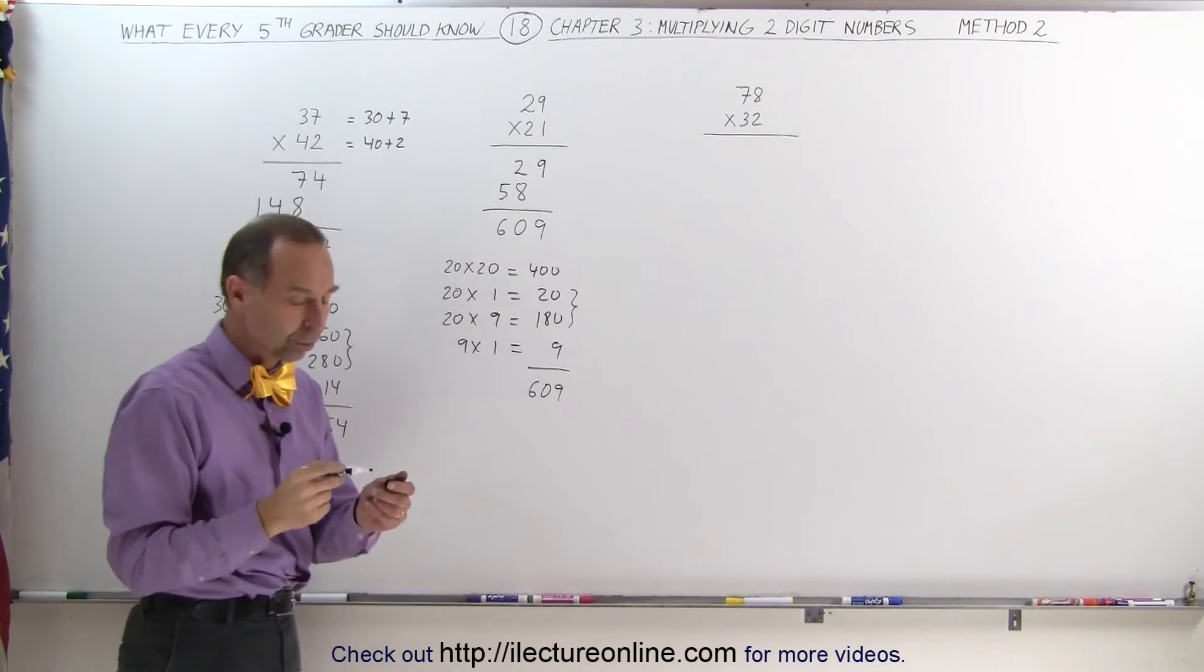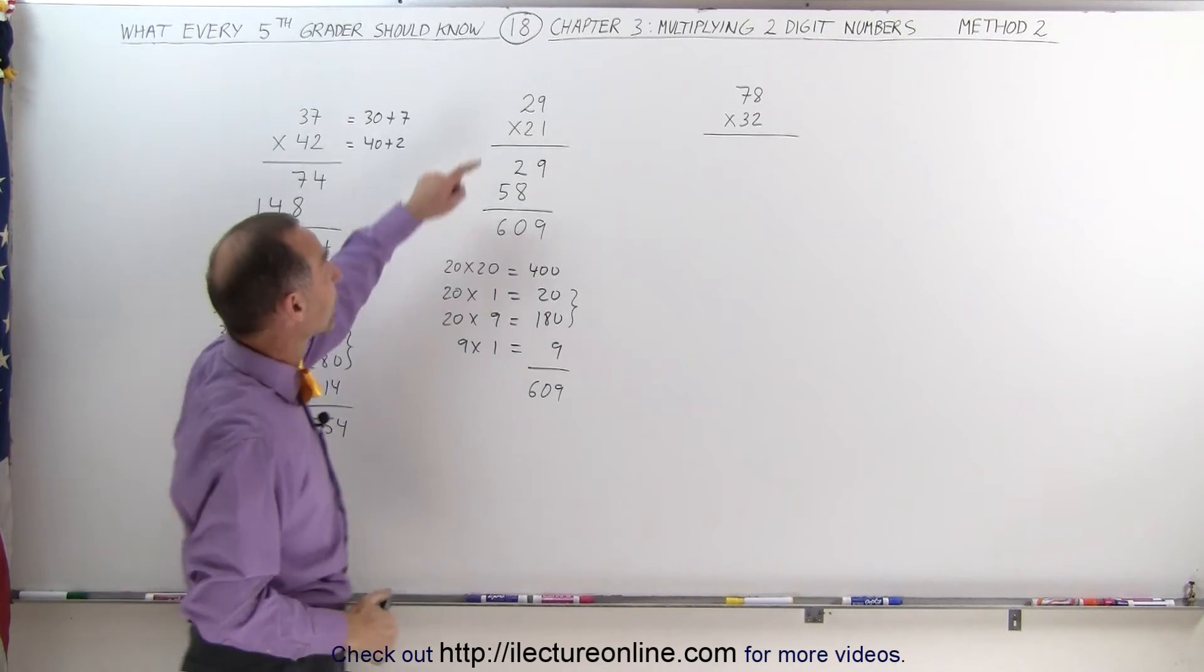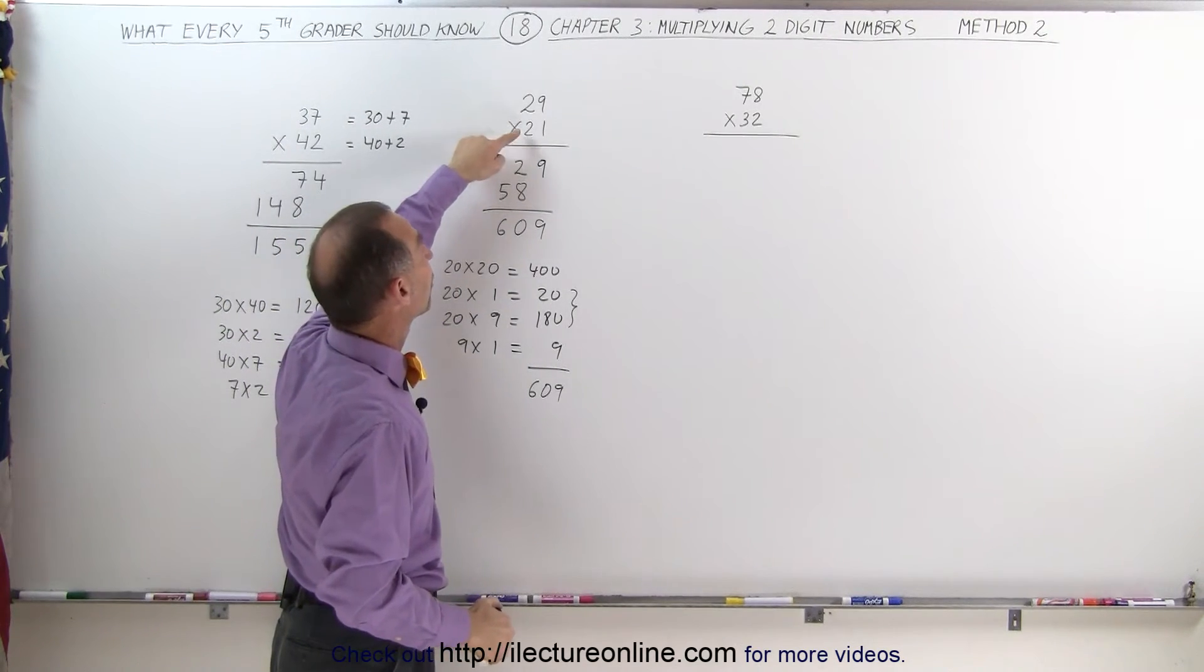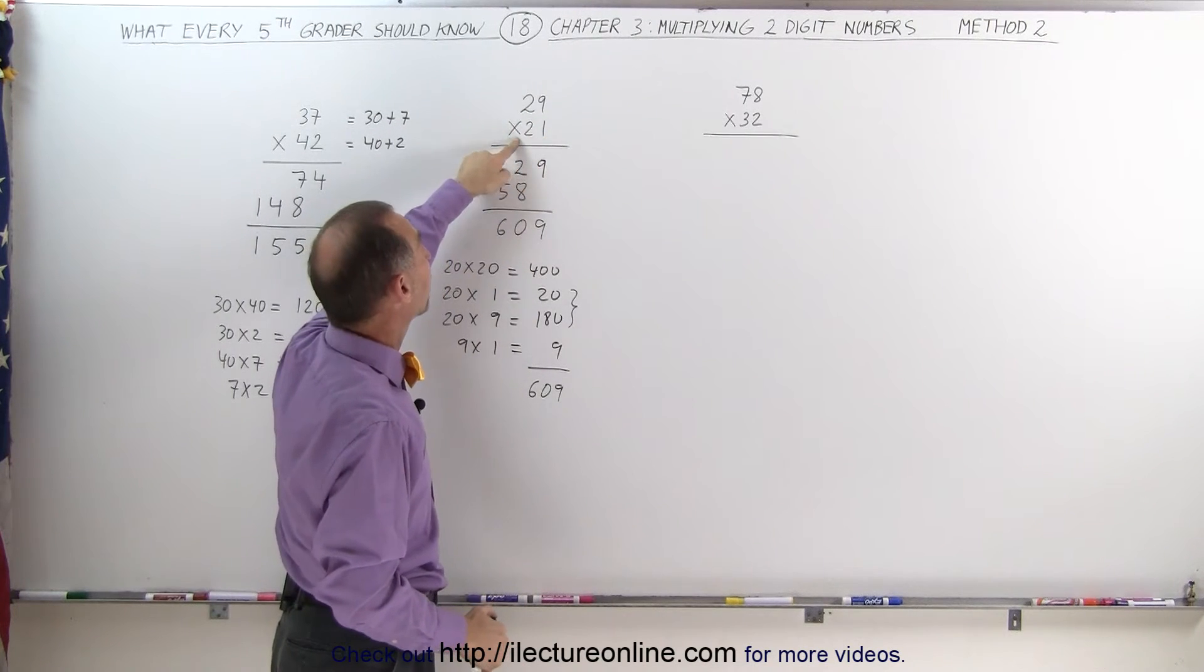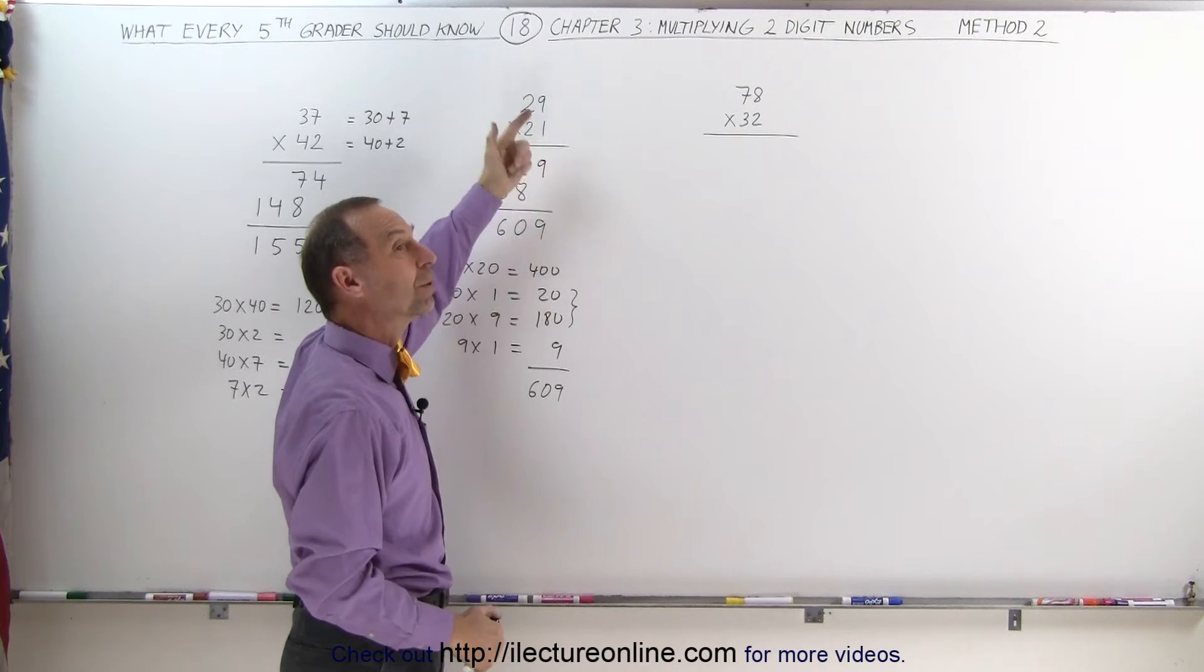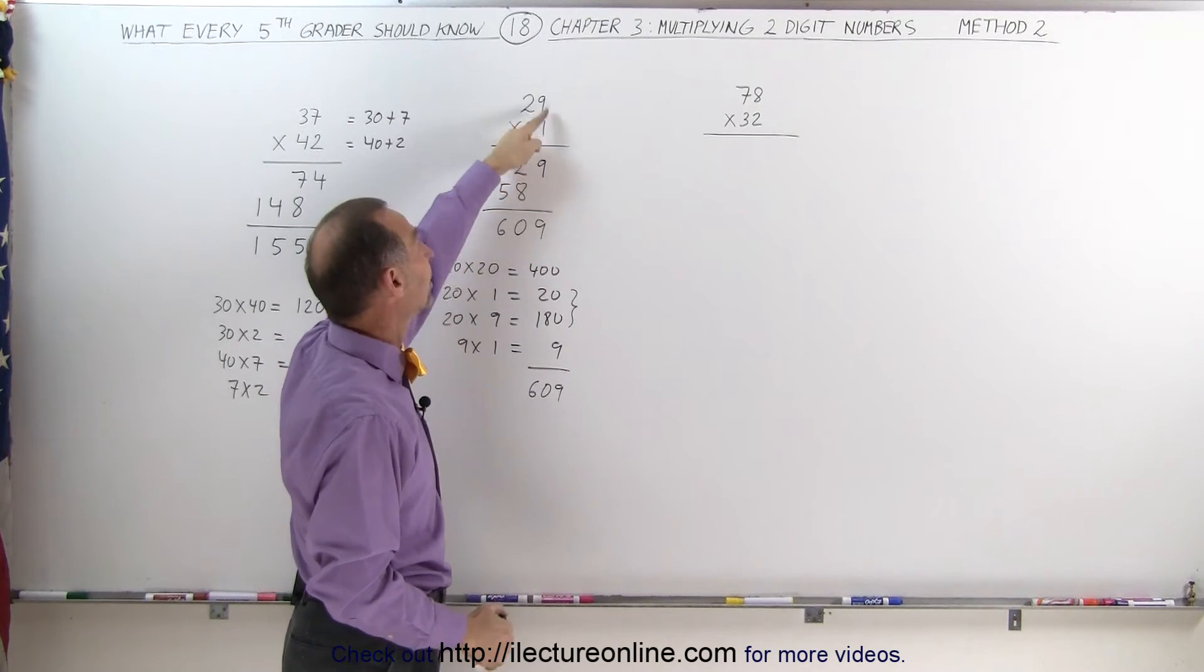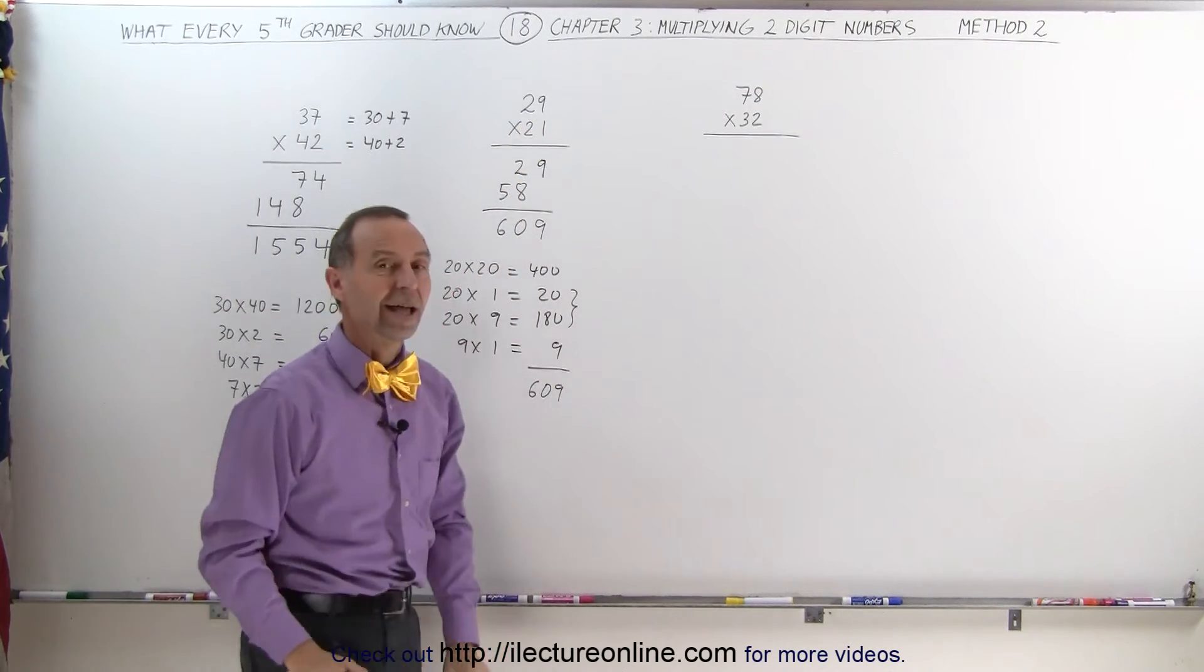Look how easy it is when you do it quickly like that. Again, 20 times 20 is 400. 20 times 1 is 20, that's 420. 20 times 9 is 180. 20 plus 180 is 200, add to 400 is 600. 1 times 9 is 9. 609.